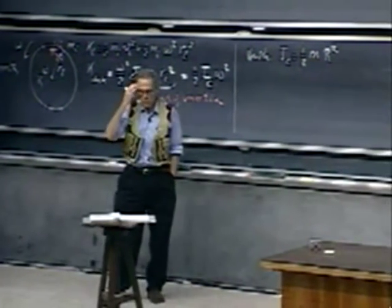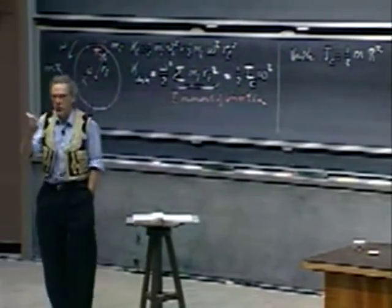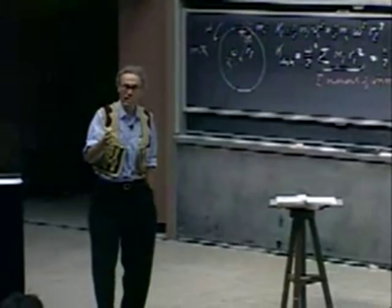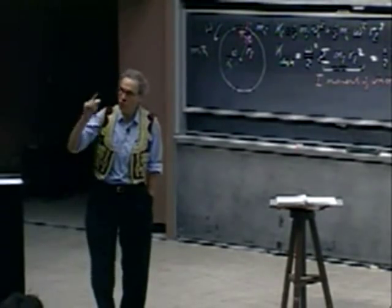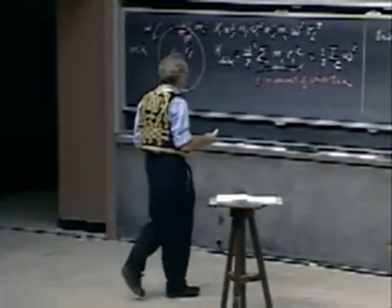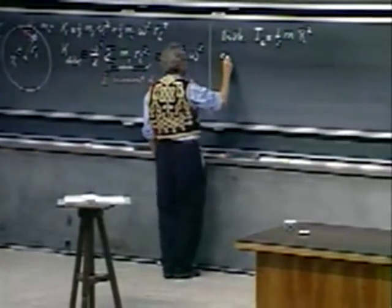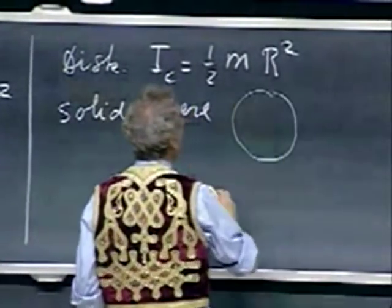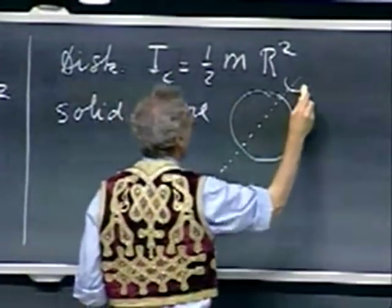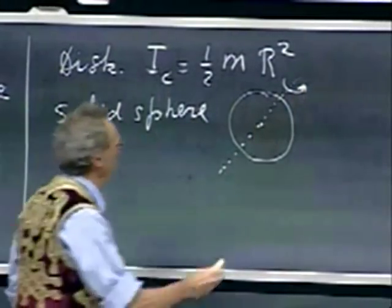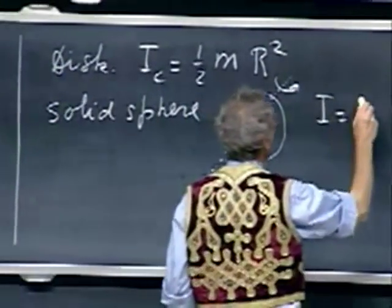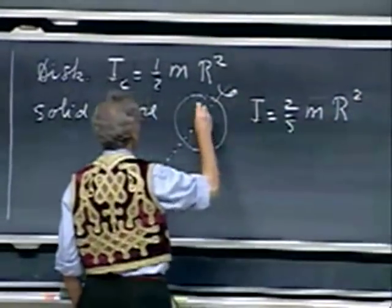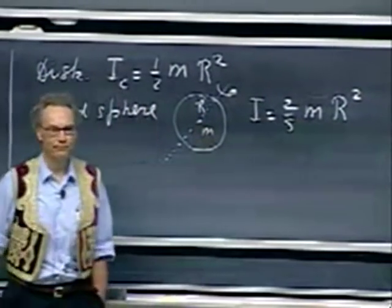The moment of inertia depends on what kind of object you have—whether a disk, sphere, or rod—and also on which axis you rotate about. For a solid sphere rotating about an axis through its center, the moment of inertia equals 2/5·MR², where R is the radius and M is the mass.